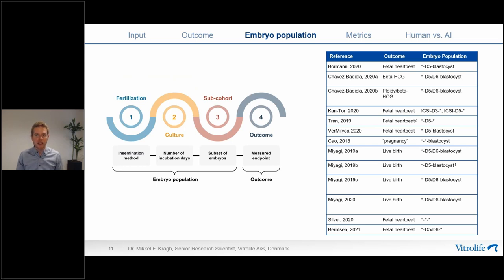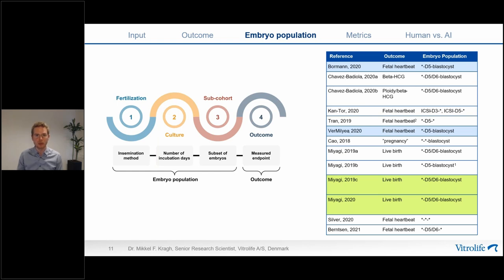In our paper, we proposed an example scheme for reporting embryo population and outcome, since AI study results are only comparable when conducted on the exact same embryo population and outcome. For example, the embryo population may be described by insemination method (IVF or ICSI), number of incubation days, and sub-cohort such as euploid blastocysts only. When we applied this to the 13 reviewed studies, only two study pairs could potentially be comparable; all others differed by measured outcome or embryos included. Further attributes like patient demographics and culture media may reveal additional differences.